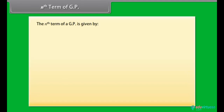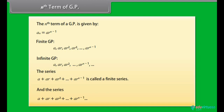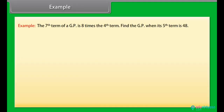The nth term of a GP is given by Aₙ = A×R^(n−1). A finite GP is a series A + AR + AR² + ... + AR^(n−1). An infinite GP is the series A + AR + AR² + ... + AR^(n−1) + ... continuing indefinitely.